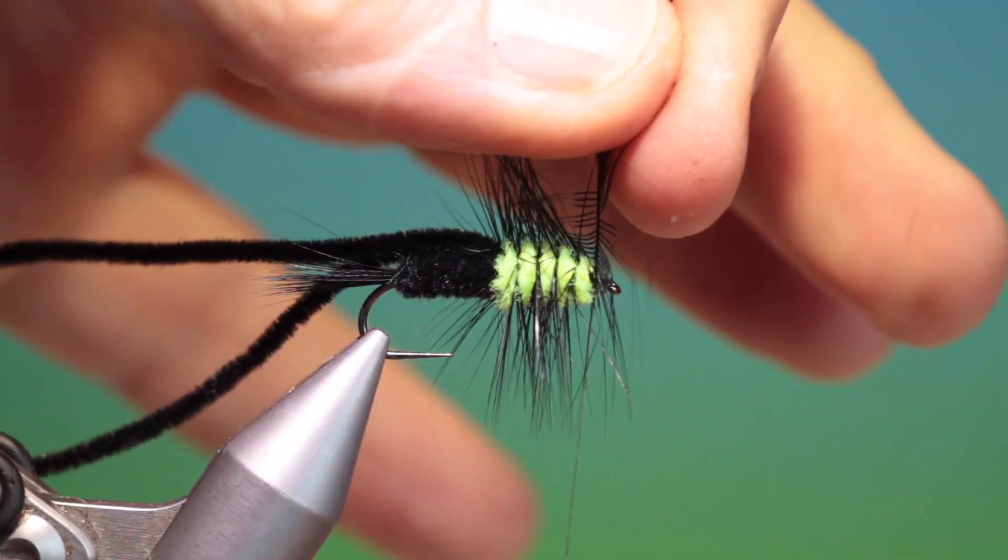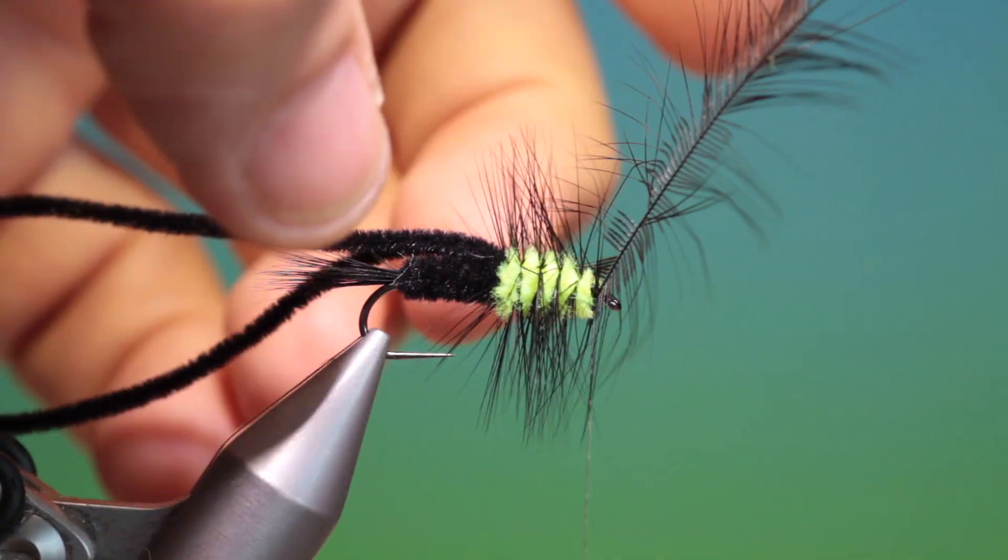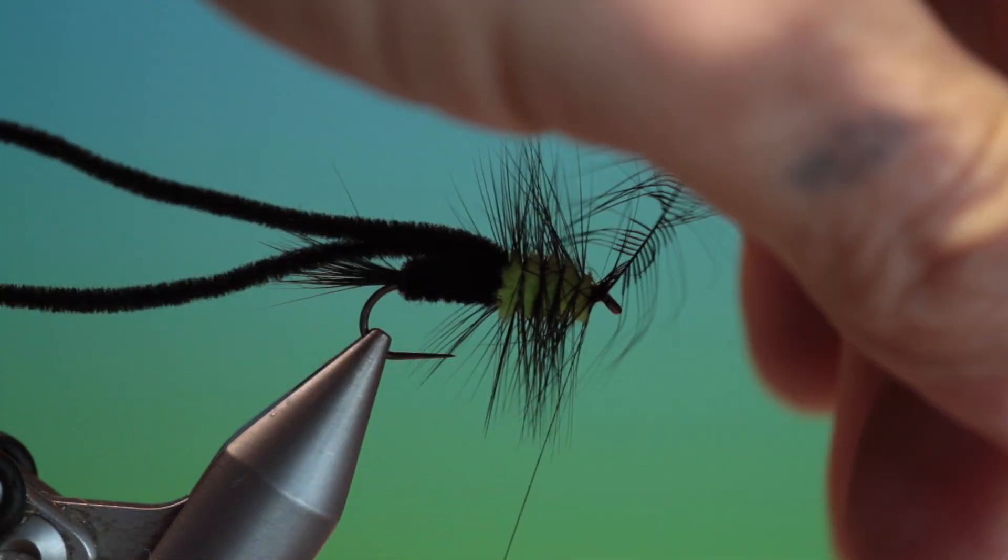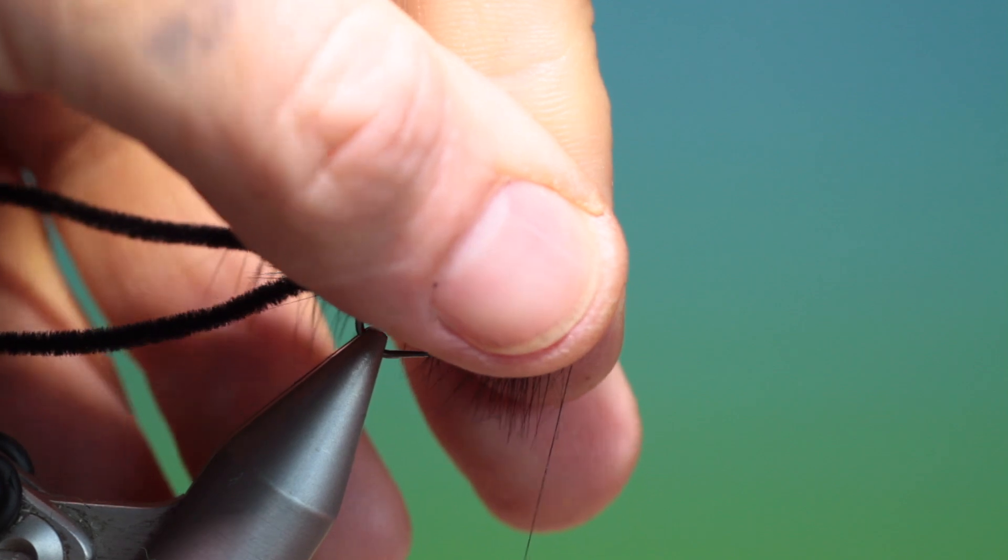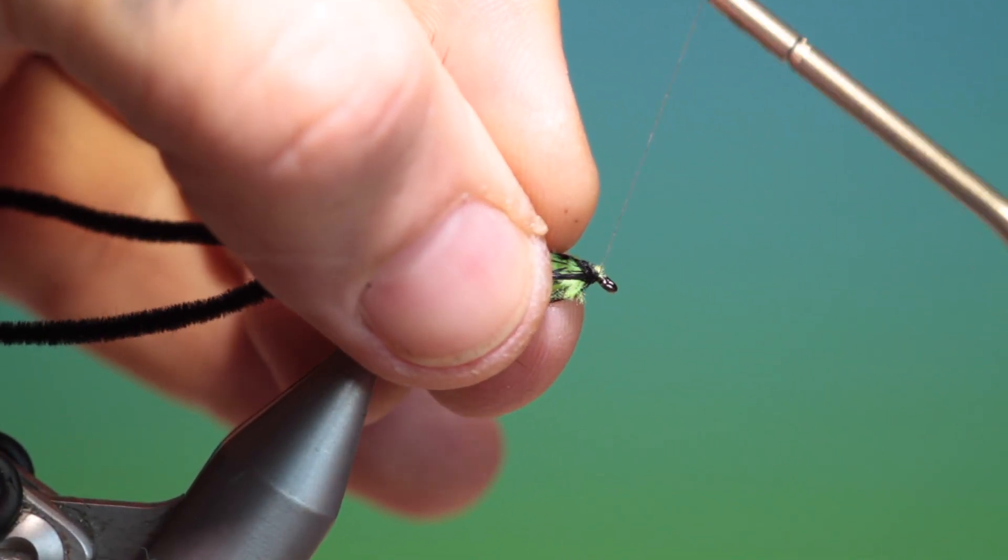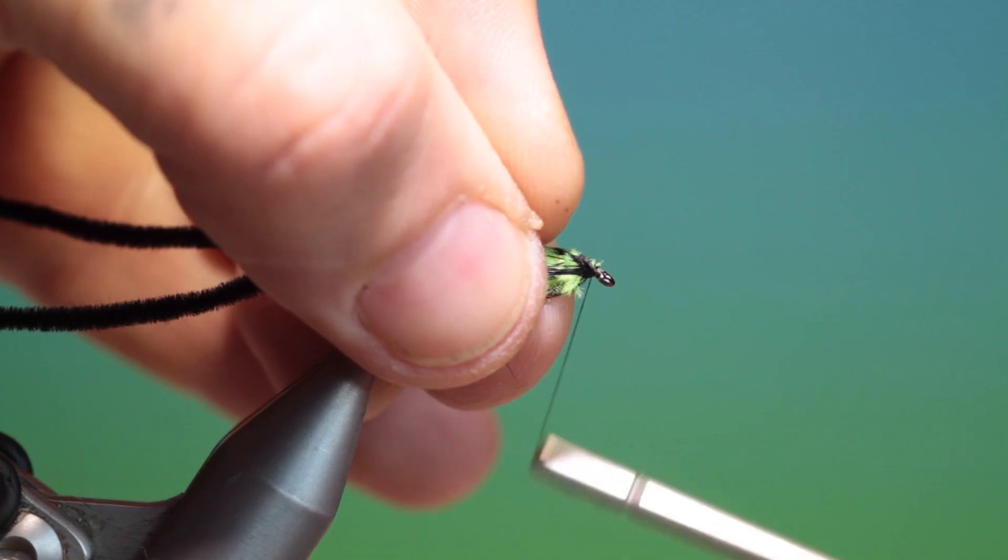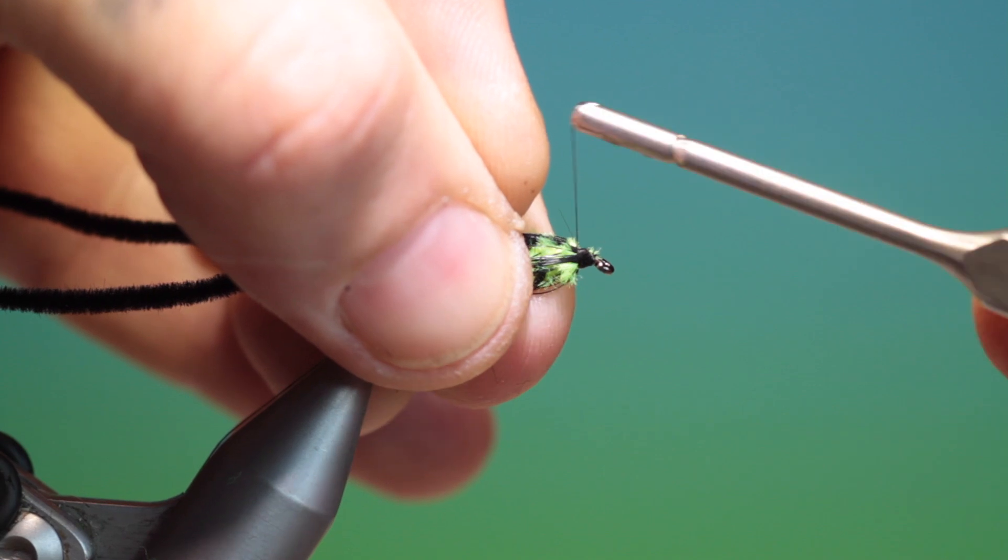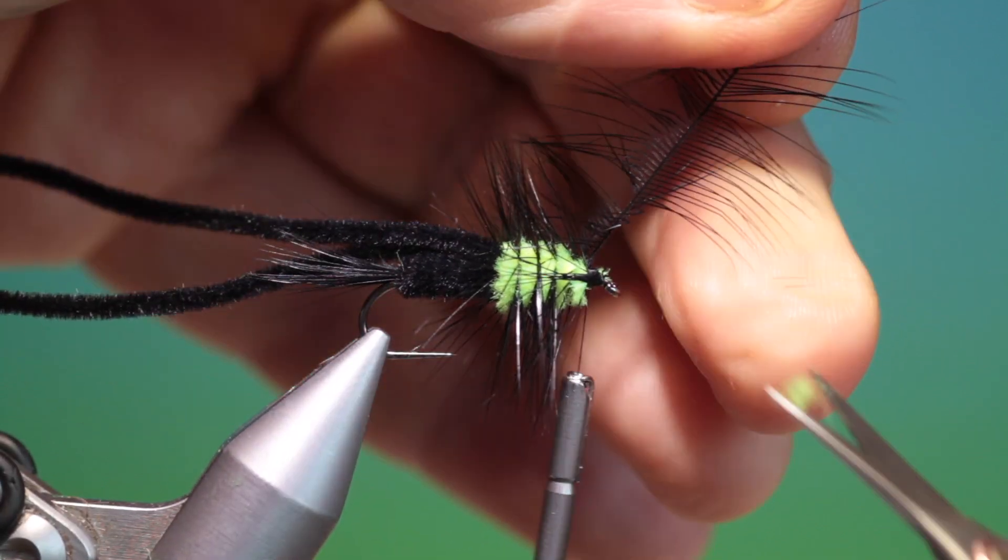And come forward with that. Three or four turns over the hackle like that. And then we bend everything back, make sure that you get everything. And then we go into the hook eye and work our way up just to secure that like so. Then we can remove that hackle.